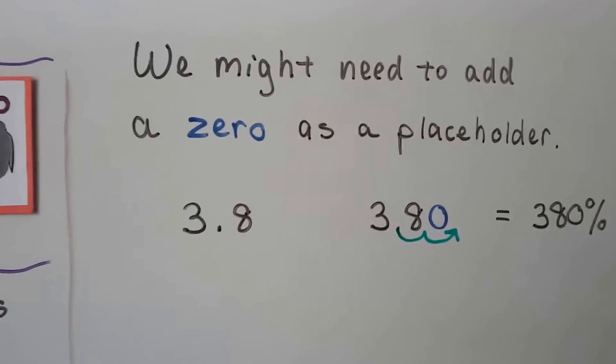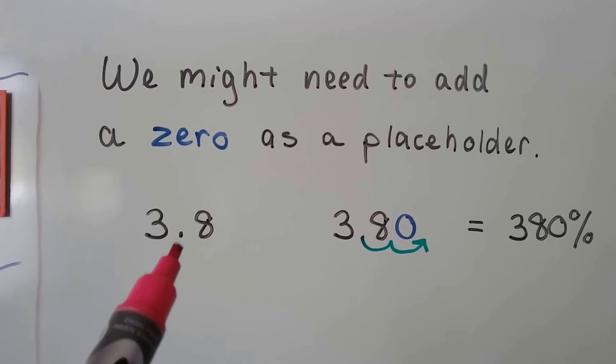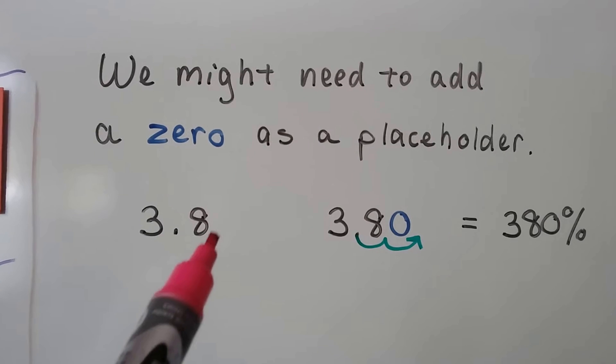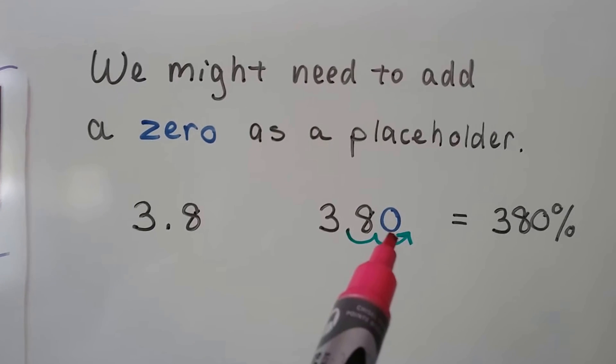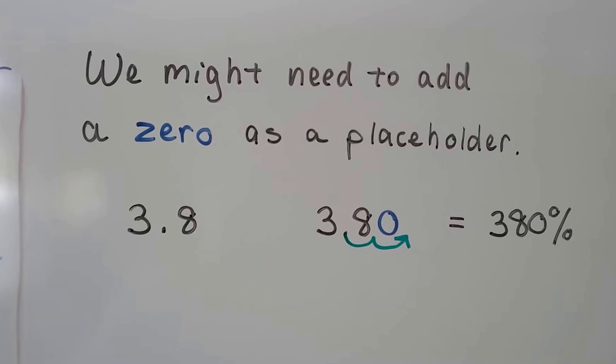We might need to add a zero as a placeholder. If we have 3.8 and we need to write it as a percentage, we need to go two hops to the right, one, two. That's going to leave an empty space, so we could put a zero there and have 380 percent.